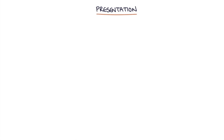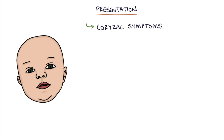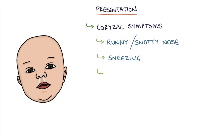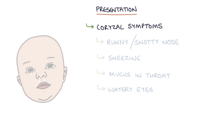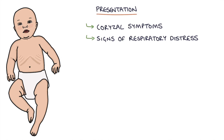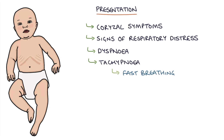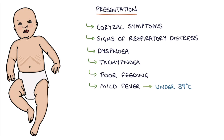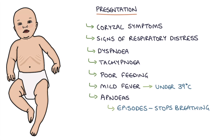How does it present? Corysal symptoms are the typical symptoms of a viral upper respiratory tract infection: a runny or snotty nose, sneezing, mucus in the throat, and watery eyes. The child will also have signs of respiratory distress. Dyspnea, which is heavy labored breathing. Tachypnea, which is fast breathing. Poor feeding. A mild fever, typically under 39 degrees Celsius. Apneas, which are episodes where the child stops breathing temporarily. And when you auscultate the chest, there can be wheezes and crackles.